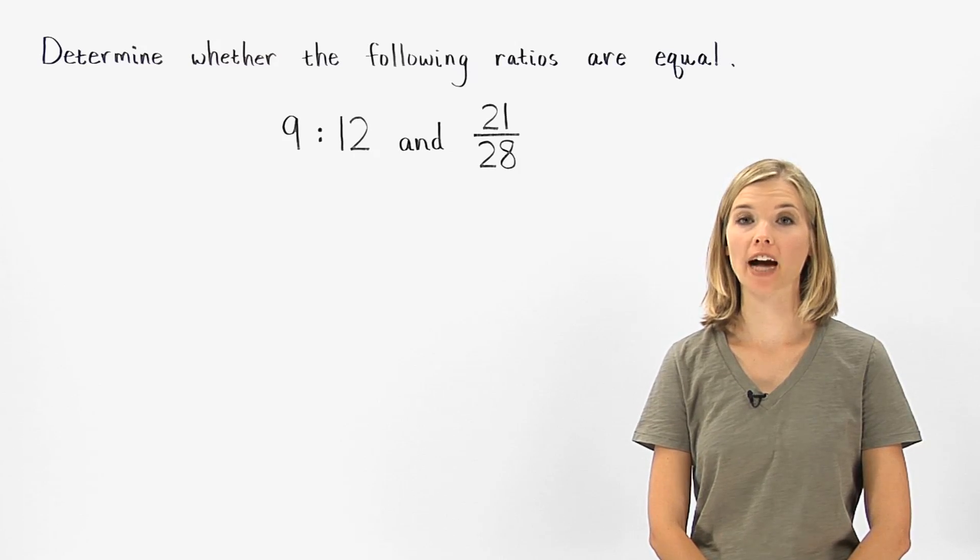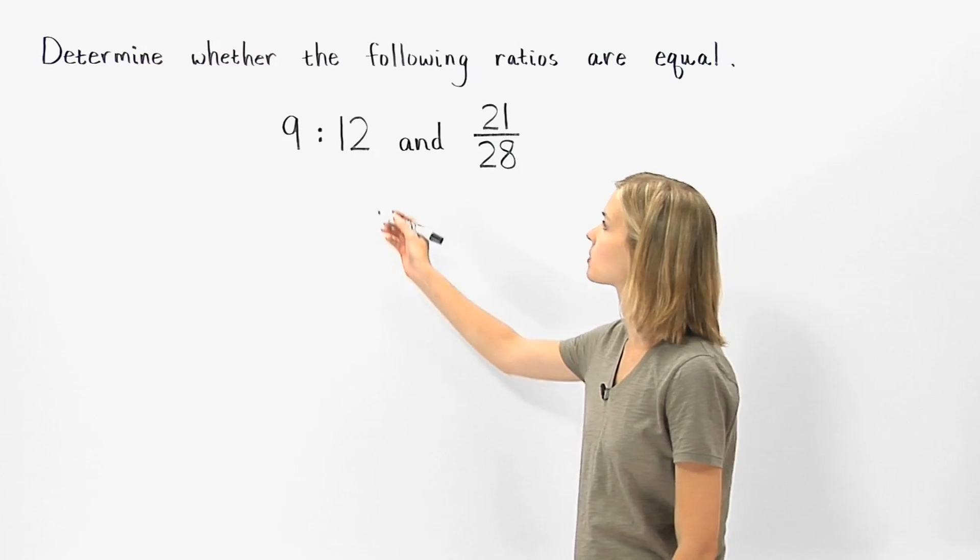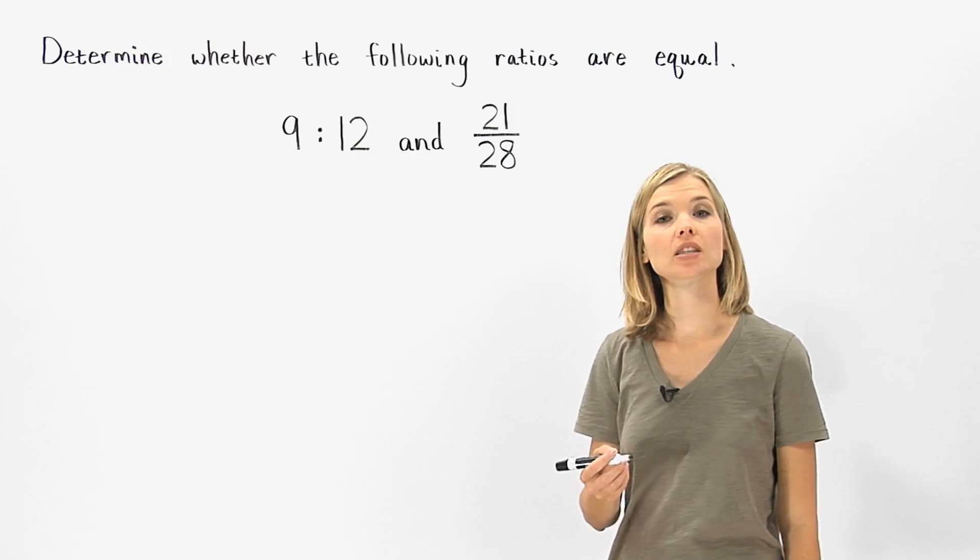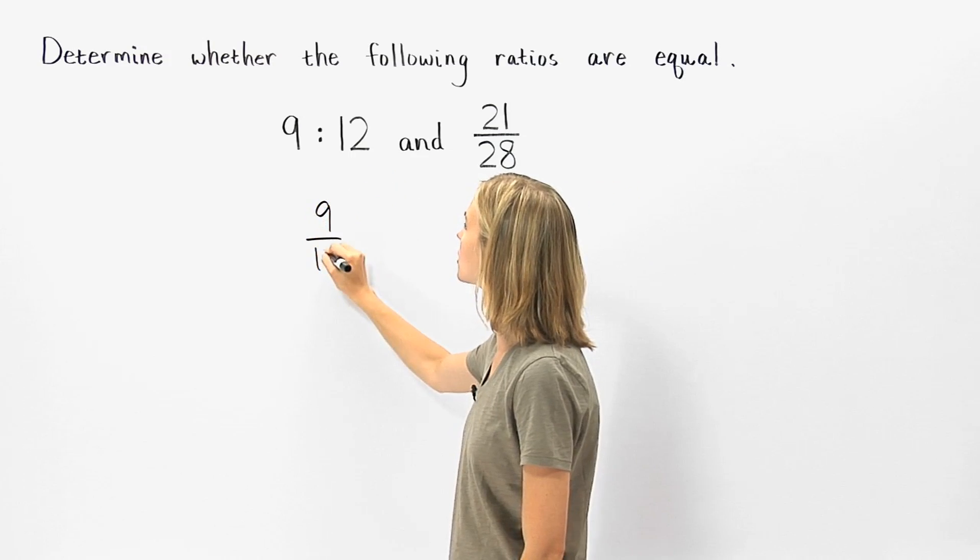Two ratios are equal if the fractions representing them are equal. So to determine whether the ratios 9 to 12 and 21 to 28 are equal, let's first rewrite the ratio 9 to 12 as the fraction 9 over 12.